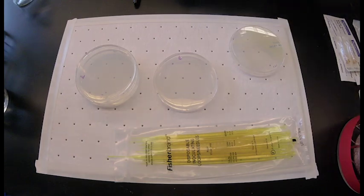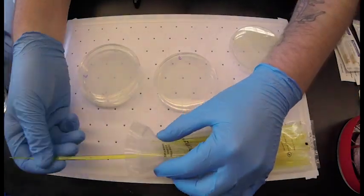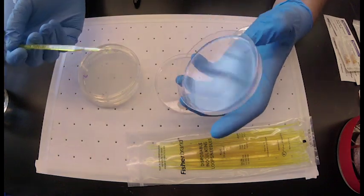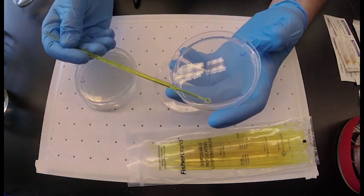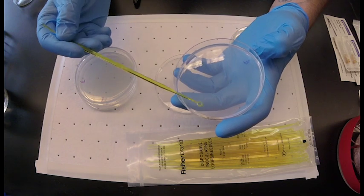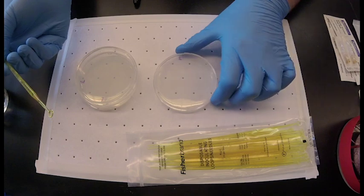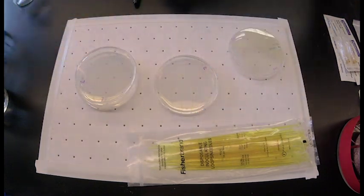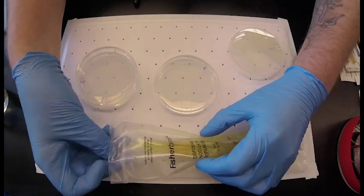For the second streak it is important to use a new loop or to sterilize your loop before streaking in the second zone. It is also important to only cross into a previous zone once in order to dilute the bacteria down to single colonies on the plate.